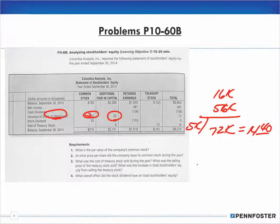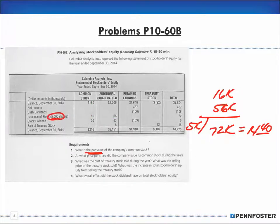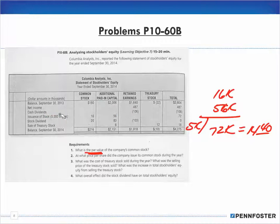Question one was only the par value — that's why we only used the $16,000. But the issuance price is what we receive when we sell the common stock, which is common stock plus the additional paid-in capital: $16,000 plus $56,000 equals $72,000, divided by 5,000 shares.